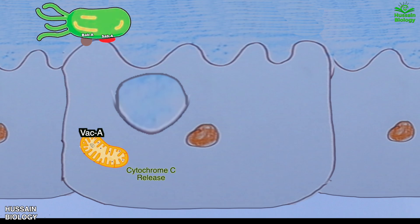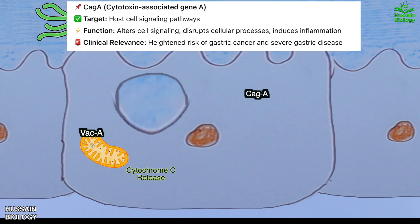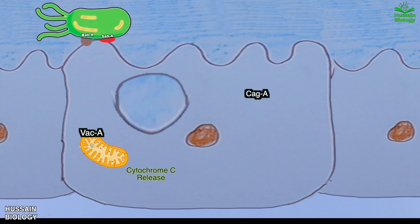Beyond vacuolation, VacA also targets mitochondria, triggering apoptosis by releasing cytochrome c, which leads to cell death. Moving to the second pathway — the CagA-driven pathway — CagA is injected into gastric epithelial cells through a specialized Type 4 Secretion System (T4SS). Once inside, CagA undergoes phosphorylation by host kinases, allowing it to interact with multiple signaling pathways. CagA disrupts cell polarity, tight junctions, and cytoskeleton organization, leading to abnormal cell shape and increased permeability. It also promotes inflammation and uncontrolled cell growth, contributing to gastritis, ulcer formation, and increased risk of gastric cancer.